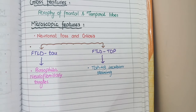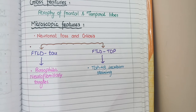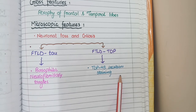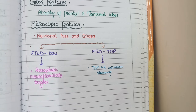There are basophilic neurofibrillary tangles in frontotemporal lobe degeneration caused by tau protein, and there are TDP43 inclusions in the cytoplasm in frontotemporal lobe degeneration caused by TDP43. This concludes the pathological features in frontotemporal lobe degeneration.